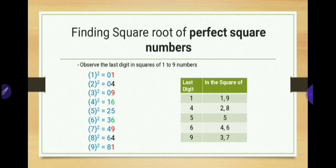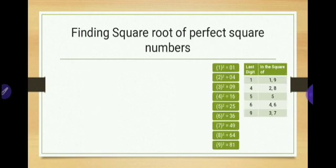4 is the last digit in case of 2 and 8. 5 is the last digit in case of 5. 6 is the last digit in case of squares of 4 and 6. 9 is the last digit in case of squares of 3 as well as 7. You have to remember this table — if you know the squares of numbers from 1 to 9, you can easily find the square root of perfect square numbers.